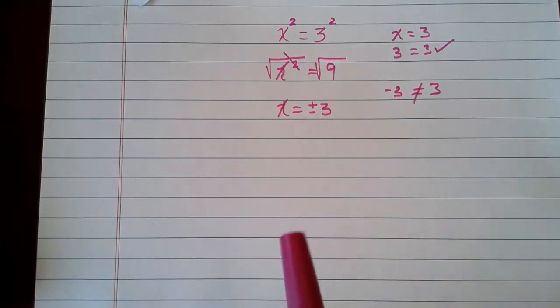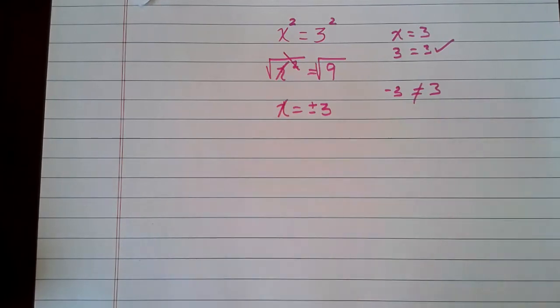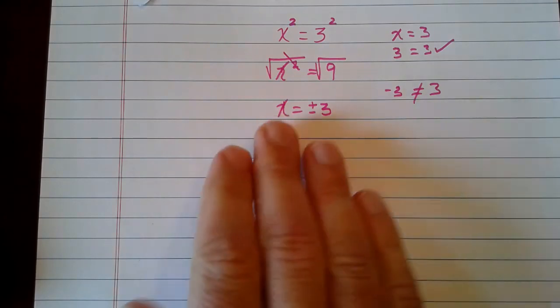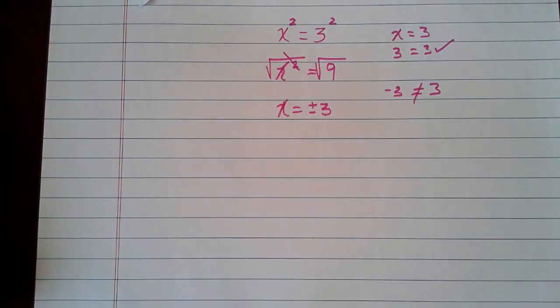So this leads us into a new idea, a new concept that sometimes when we square a side and then we need to take the square root of a side, it creates a scenario.